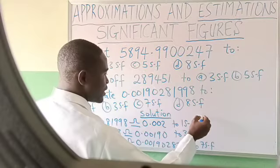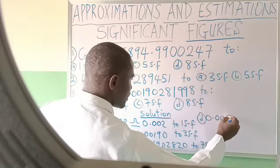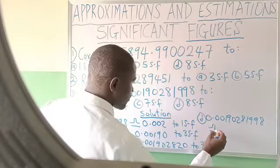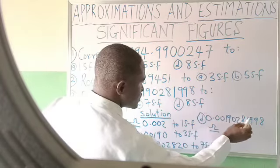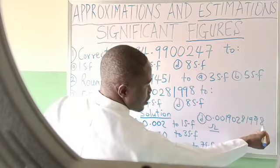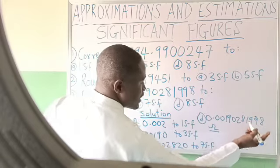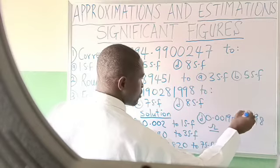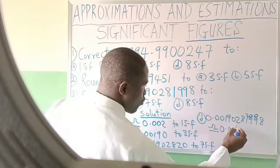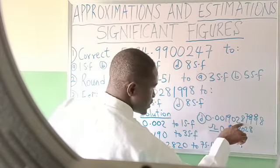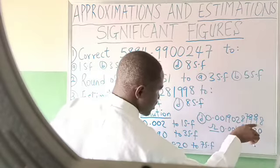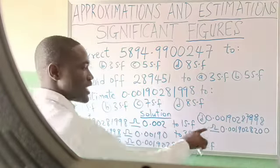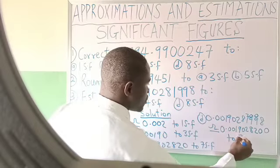Finally, to 8 significant figures. Rewrite: 0.001902819998. Count from 1: one, two, three, four, five, six, seven, eight. It falls at the second 9. Ask the next number: 8. Is it up to 5? Yes — call it 1. Add to 9: becomes 10, write 0, carry 1. Add to 9: becomes 10, write 0, carry 1. Add to 1: becomes 2. So instead of 1, 9, 9 — write 2, 0, 0. Answer: 0.00190200 — but do not replace the trailing 8 with zero since it falls after the decimal point. To 8 significant figures: 0.00190200.